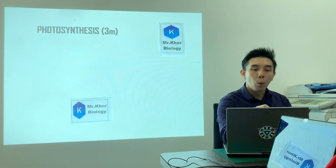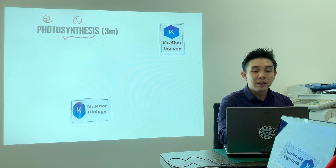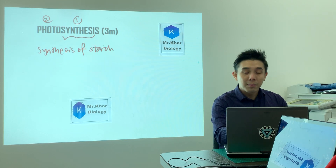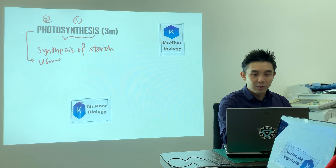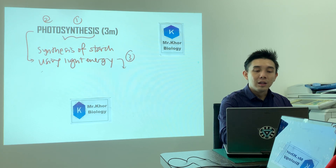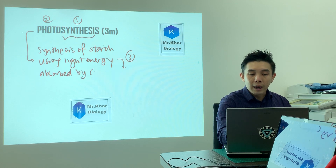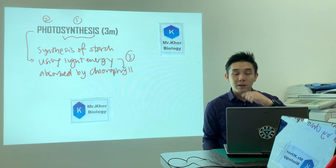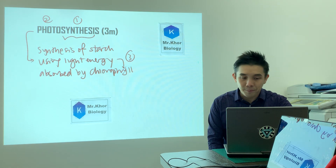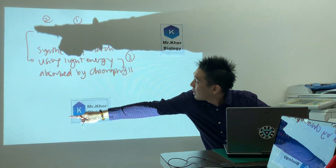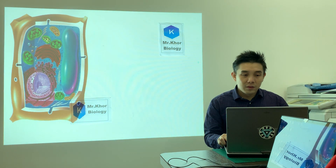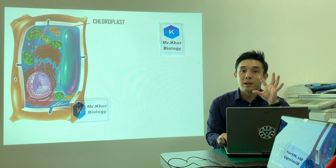Here's how I do it in two to three steps. Step one: photosynthesis is the synthesis of starch — 'starch' in Malay is 'kanji'. Step two: 'photo' means light, so it uses light energy. Step three: light energy is absorbed by chlorophyll in the chloroplast. This is how you memorize photosynthesis — synthesis of starch, using light energy, absorbed by chlorophyll.